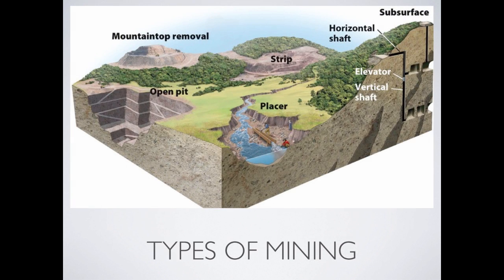The next part of this video is going to be about different types of mining. I want to give you a quick overview of each one. I'll go through them in detail, but you might want to come back to this diagram for a visual. Here are the types you need to know: mountaintop removal, which is exactly what it sounds like — you take off the top of a mountain to get whatever you're after. Open pit, where you dig a pit straight down into the ground. These names aren't hard to remember because they make sense.